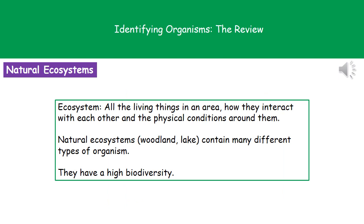The first thing we need to understand is what an ecosystem actually is. Whenever we talk about an ecosystem, we're not only referring to the living things in that area but how they interact with each other and with the physical conditions around them — all of that together makes up one ecosystem. Natural ecosystems are ones that occur without any human interaction, such as woodlands and lakes.